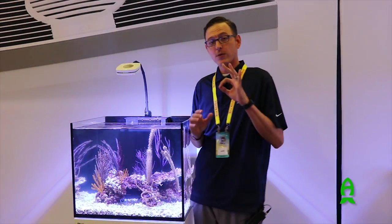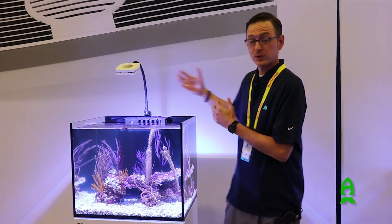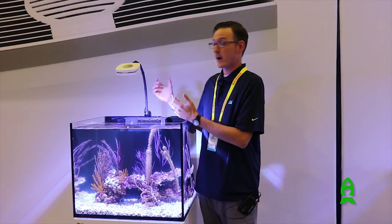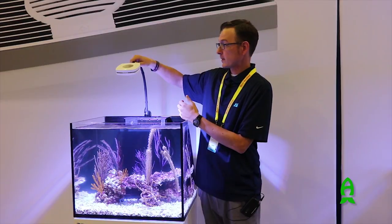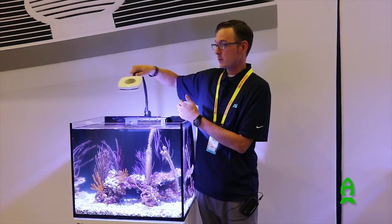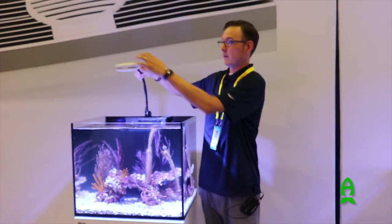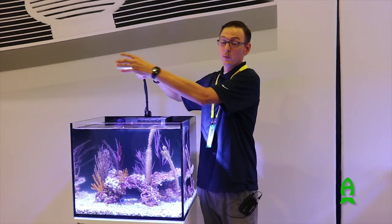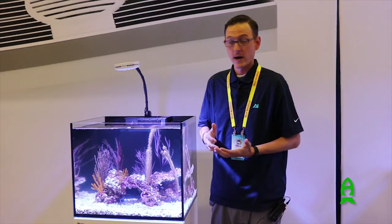So for the AI Prime, we've got three different mounting options. The one shown here is our latest, the Prime gooseneck, and it's a very flexible piece. You're allowed to go north, south, you can move it east, west, and bring it all back in. You can move it down, you can move it level. It's a really very functional product for AI.